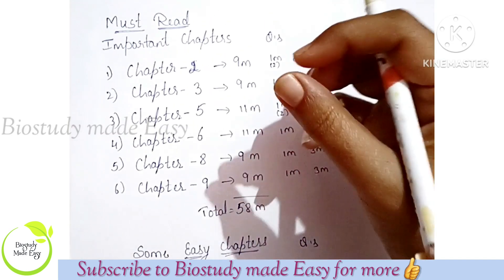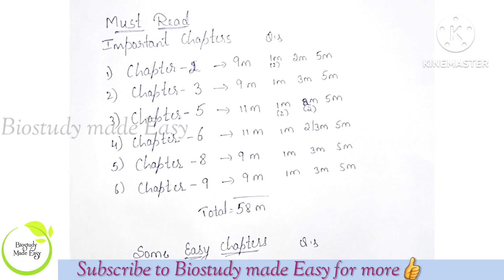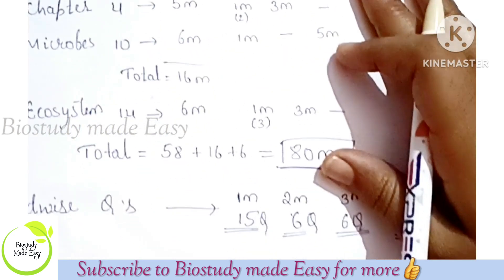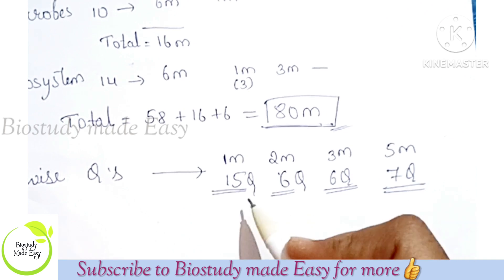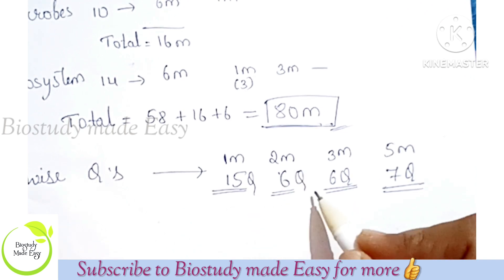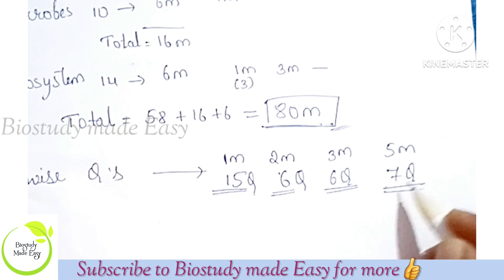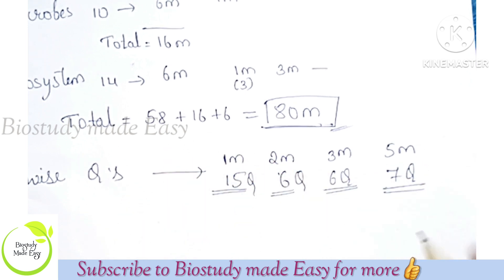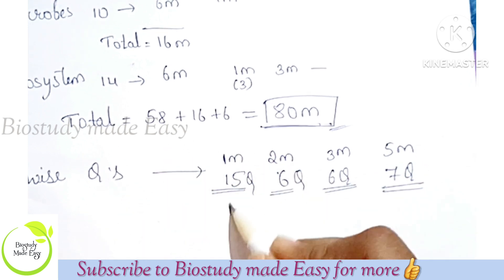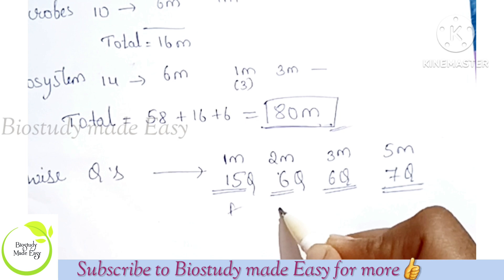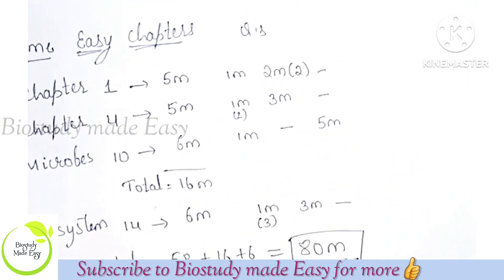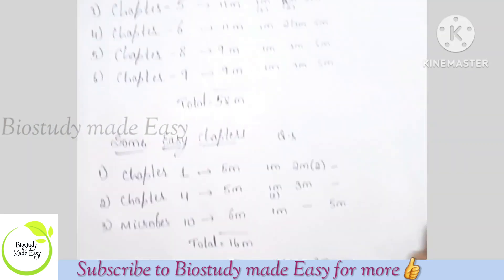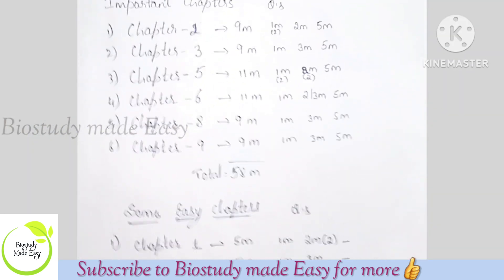Some chapters are difficult and some are easy. By the end of this video you will know: 1 mark — 15 questions, 2 marks — 6, 3 marks — 6, 5 marks — 7. These are options. So all parts A, B, C and D — you will have options. You will be able to attend the exam. So let's begin.